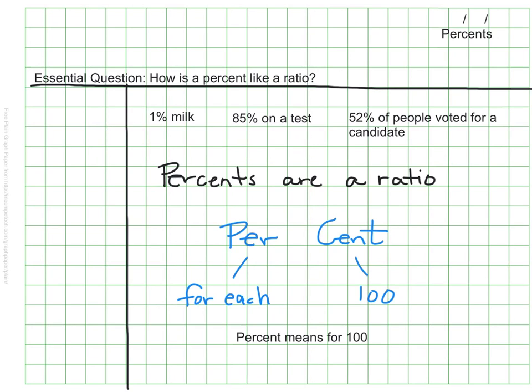When we see that someone gets an 85% on a test, it means that for every 100 questions, they got 85 of them right. When we hear 52% of the people voted for a candidate, it means that in a group of 100 people, 52 of them voted for him or her.